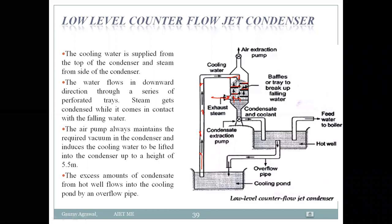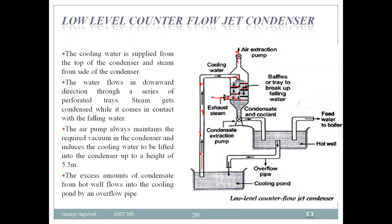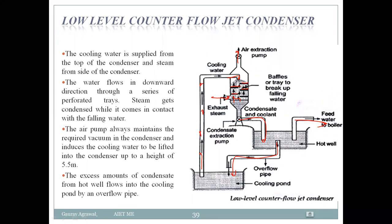Due to gravity, the condensate and cooling water fall downward. Air is extracted separately. The condensate is collected in a hot well, and if there is overflow, it is directed to a cooling pond. From there it is sent to the boiler. This is the simple structure of the low level counter-flow condenser.